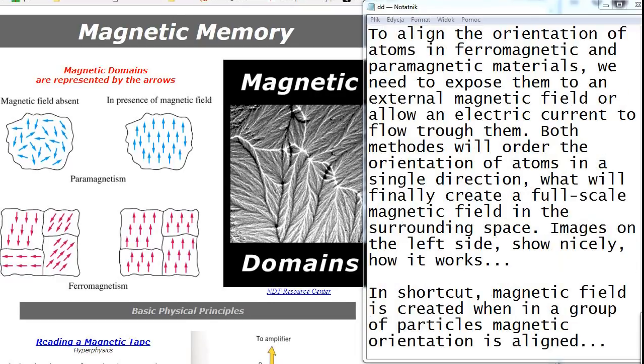To align the orientation of atoms in ferromagnetic and paramagnetic materials, we need to expose them to an external magnetic field or allow an electric current to flow through them. Both methods will order the orientation of atoms in a single direction, what will finally create a full scale magnetic field in the surrounding space. Images on the left side show nicely how it works. In shortcut, magnetic field is created when in a group of particles magnetic orientation is aligned.